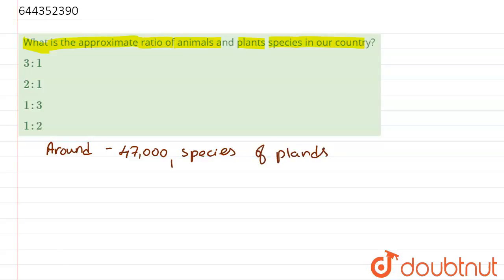And we have double the amount of animals, double the number of animals. Now around 81,000 species of animals, we can say that...